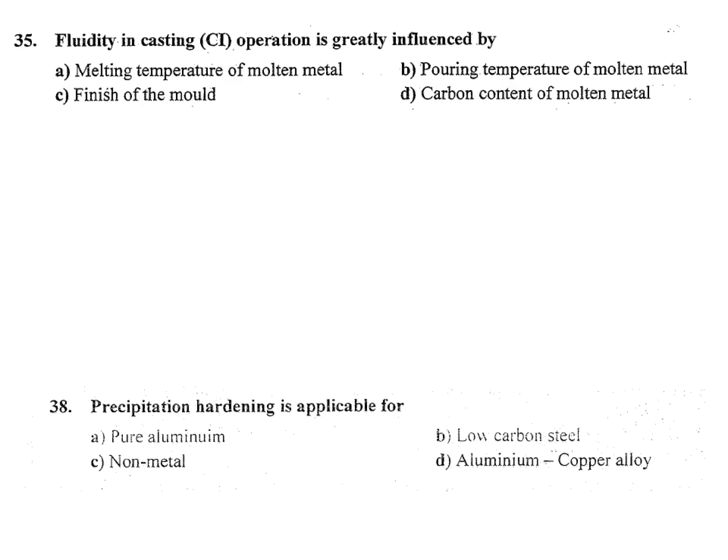Fluidity in casting operation is greatly influenced by: A) melting temperature of molten metal, B) pouring temperature of molten metal, C) finish of the mould, D) carbon content of molten metal. The answer is B — pouring temperature of molten metal.